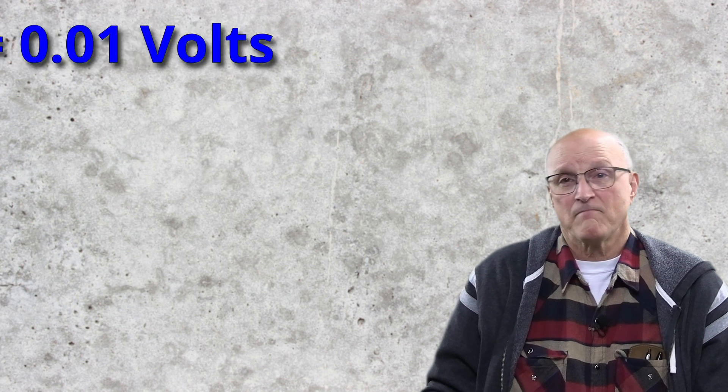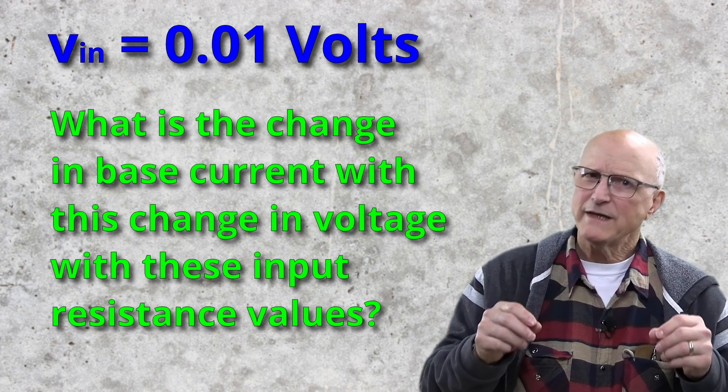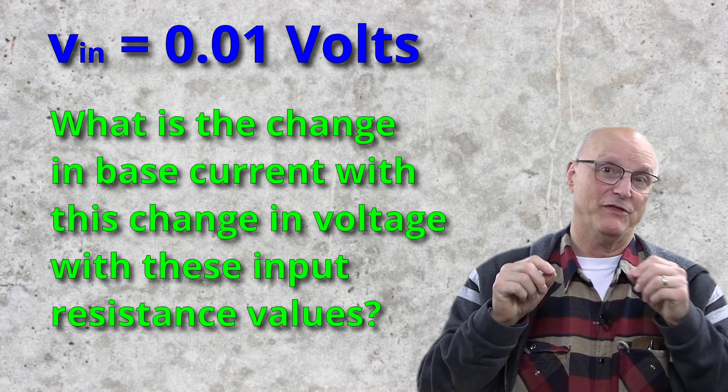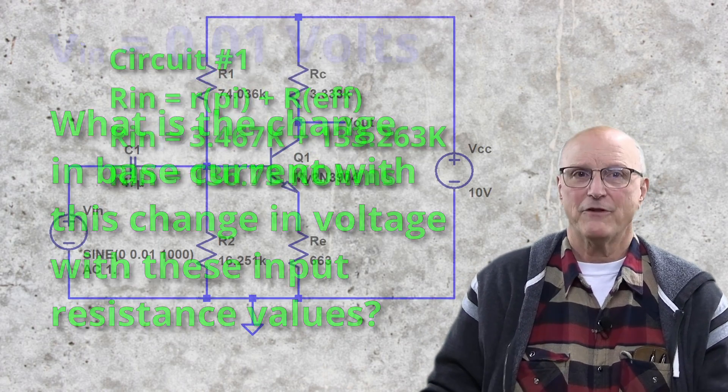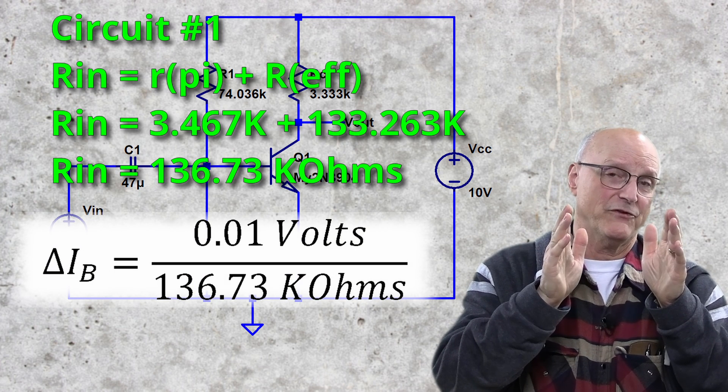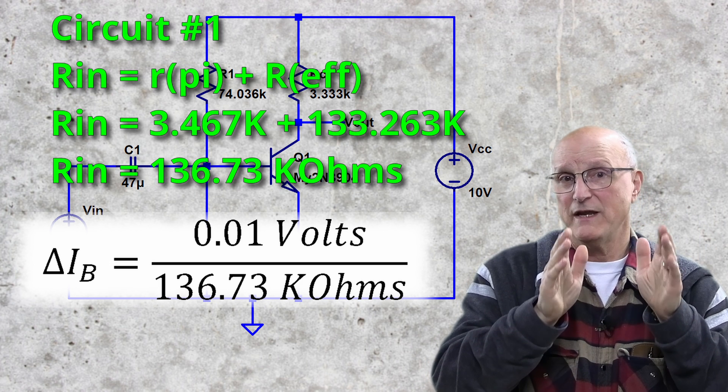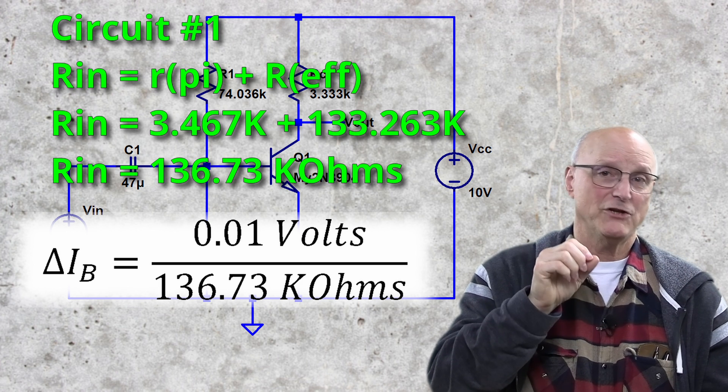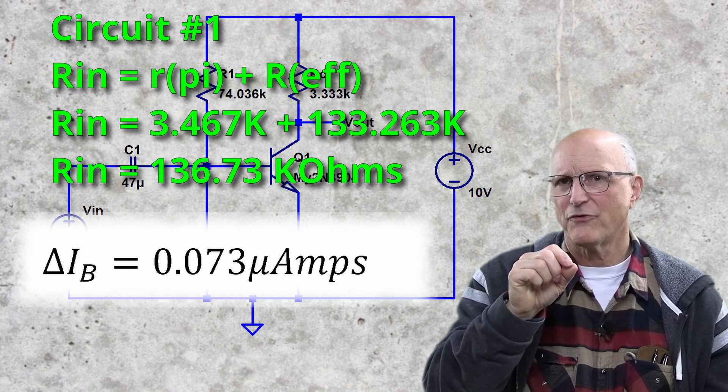Now, let's consider putting an input signal into the base of each of these circuits of, let's say, 0.01 volts, 10 millivolts. And so we ask, what is the change in base current with this change in voltage and these input resistance values?